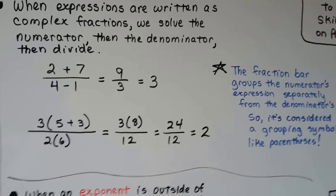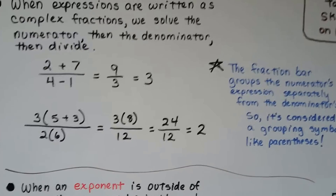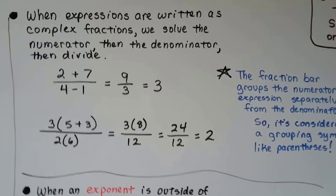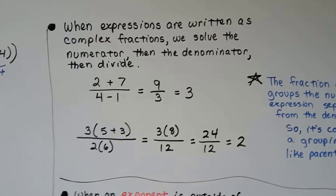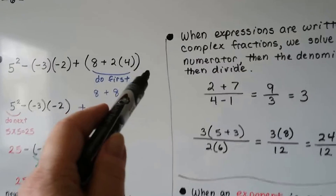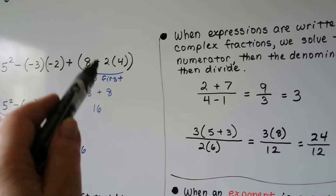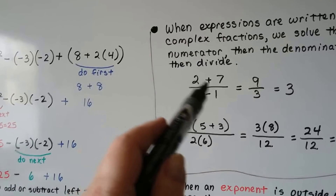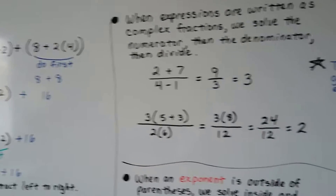The fraction bar groups the numerator's expression separately from the denominator's, so it's considered a grouping symbol like parentheses. So if you saw a complex fraction at the end of an expression, you would do that fraction first — because it's a grouping symbol — and then do the exponent.